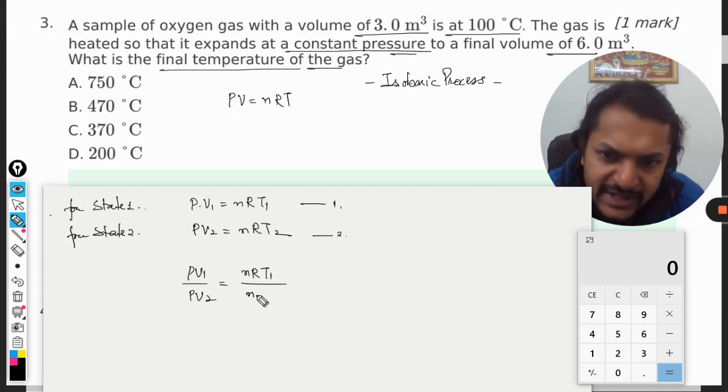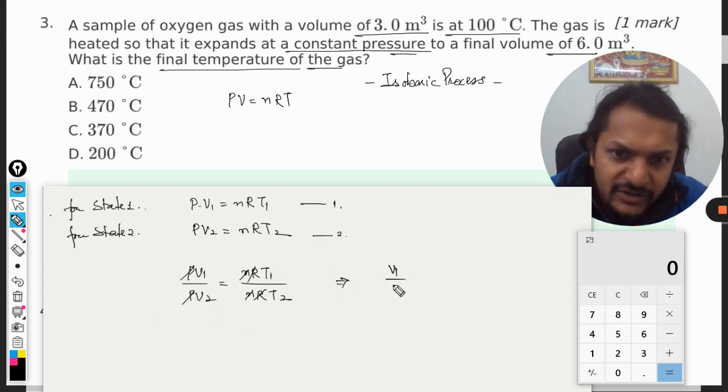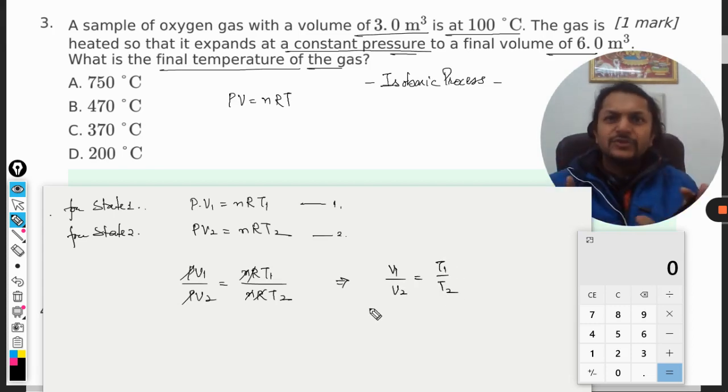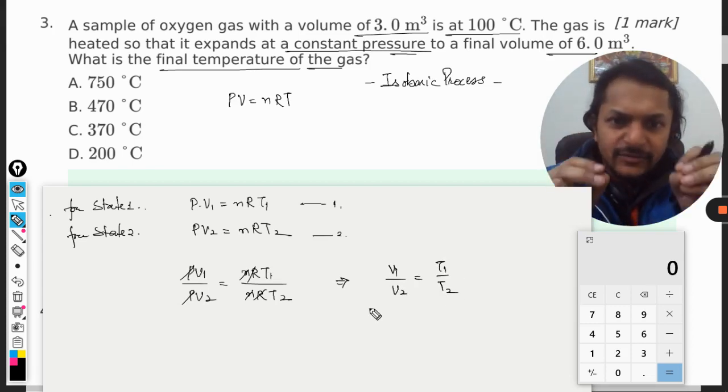So P₁V₁ divided by P₂V₂ equals nRT₁ divided by nRT₂, and all these things will get cancelled out because they are not changing. So we reach to this equation which is quite simple to solve.